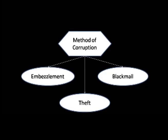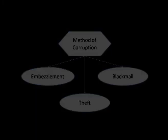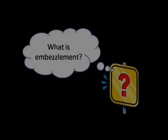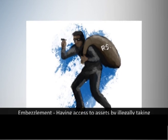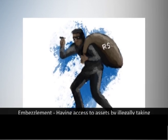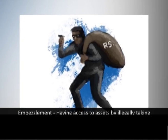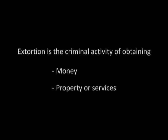The methods of corruption include embezzlement, theft, fraud, extortion, and blackmail. Embezzlement involves someone having access to assets and illegally taking control of them. Extortion is the criminal activity of obtaining money, property, or services illegally in a coercive manner — that is, by threatening and blackmailing.